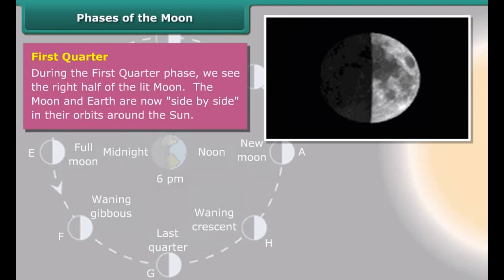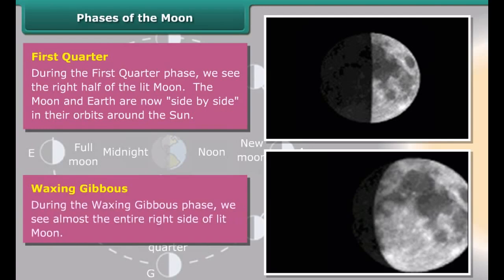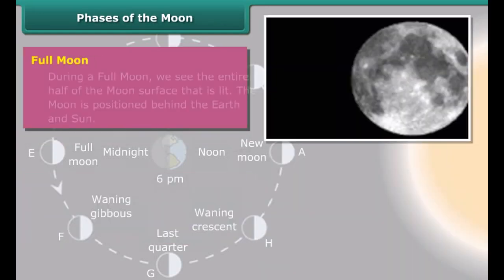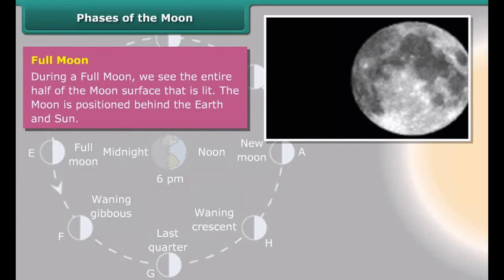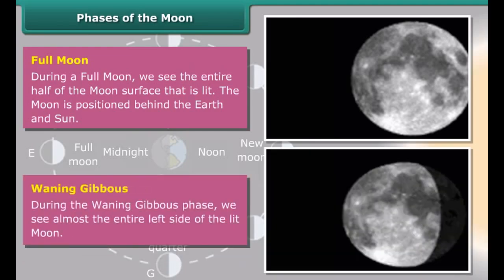Phases of the Moon: New Moon — during a new Moon, we can see no portion of the Moon's surface that is lit; we see only the dark side of the Moon. This typically marks the beginning of the lunar cycle, which lasts 29.5 days. The Moon is between the Earth and the Sun in its orbit.